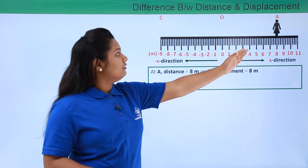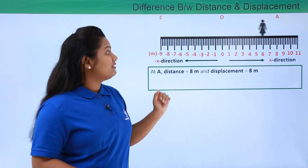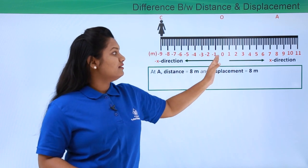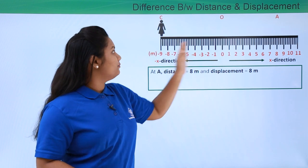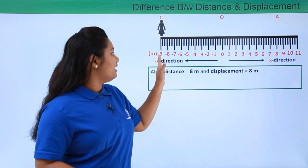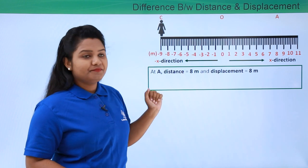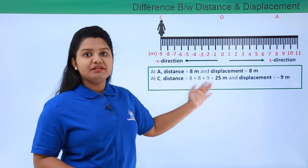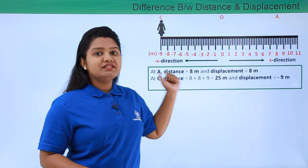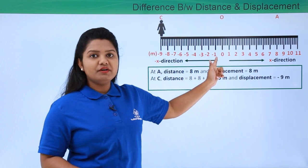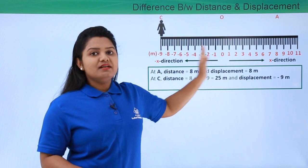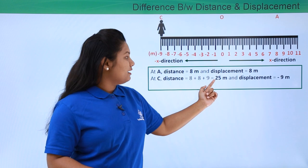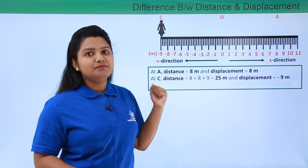Now let's say the girl returns to point O and comes back to point C. She has covered back the same distance of eight meters to O, and again she has moved backwards to point C, covering nine meters extra. So the distance in this case at point C becomes 8 plus 8 plus 9, which is 25 meters. But for displacement, we just need to see the final and the initial positions of the body, which is minus nine and zero. So minus nine minus zero equals minus nine meters. Here the distance is 25 meters but the displacement is minus nine meters.